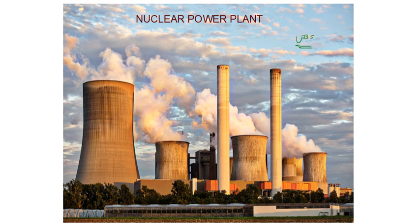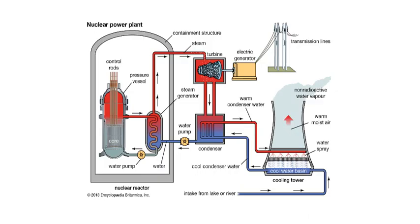We use uranium in the nuclear power plant, because the nucleus splits into barium and krypton. In the fission reaction the mass of the products is less than the reactants, and we get more energy from that. Nuclear reaction takes place in the nuclear power plant. Let's now move towards the working diagram of the nuclear power plant.